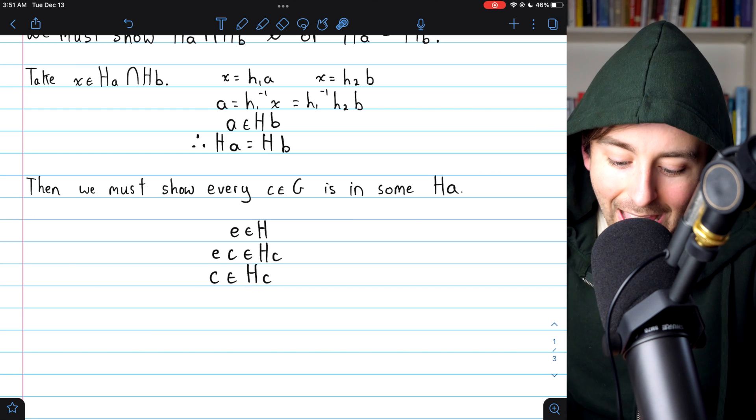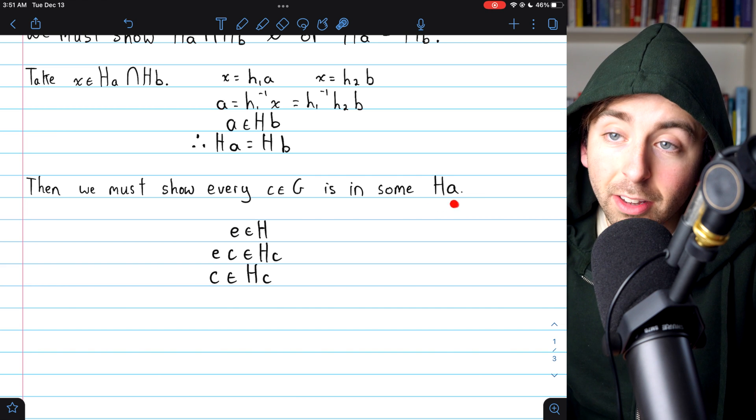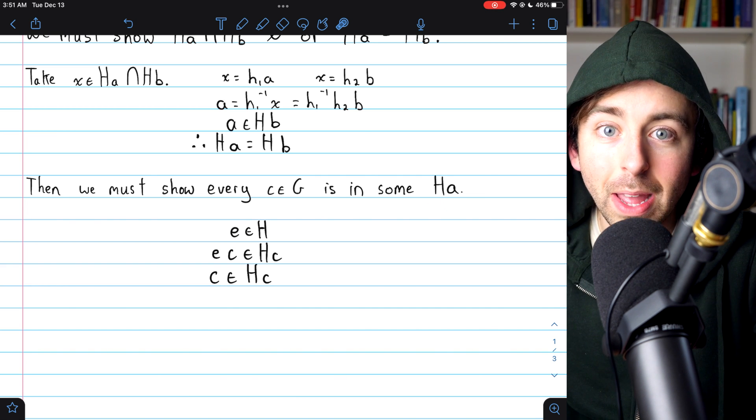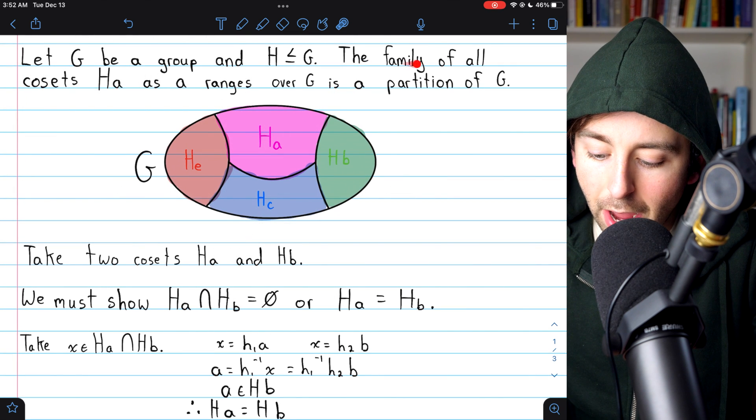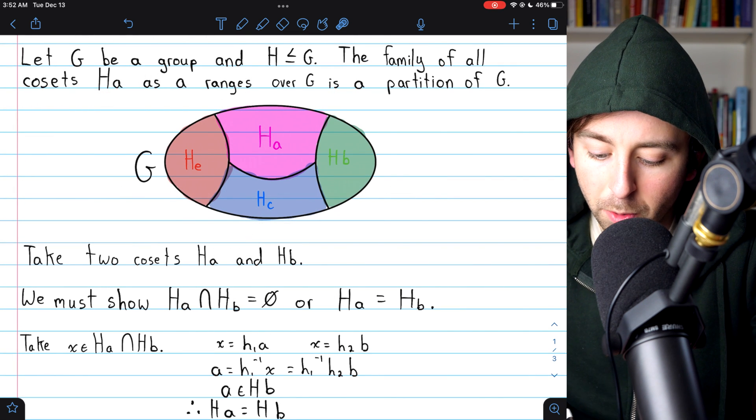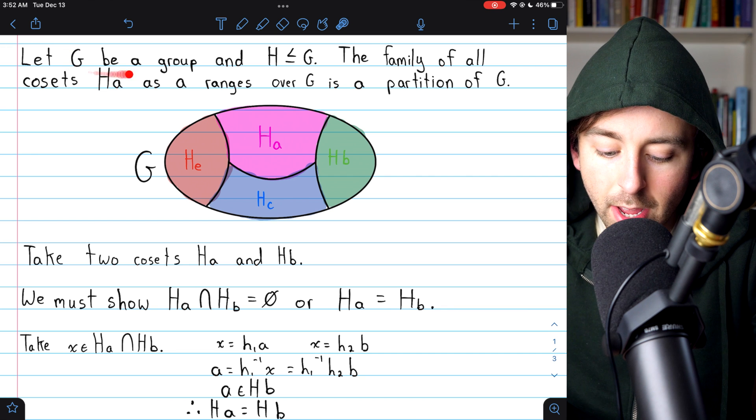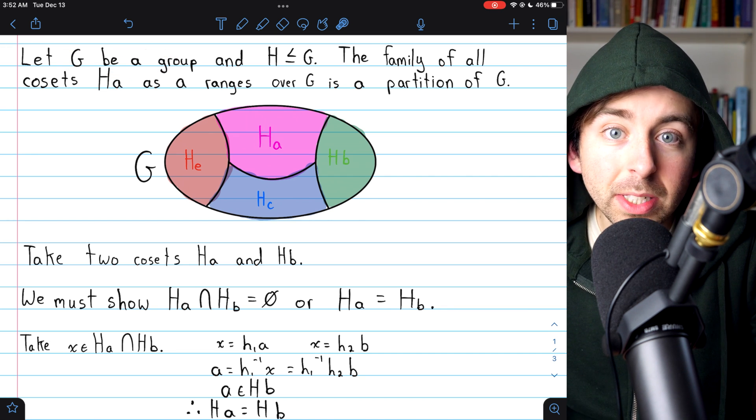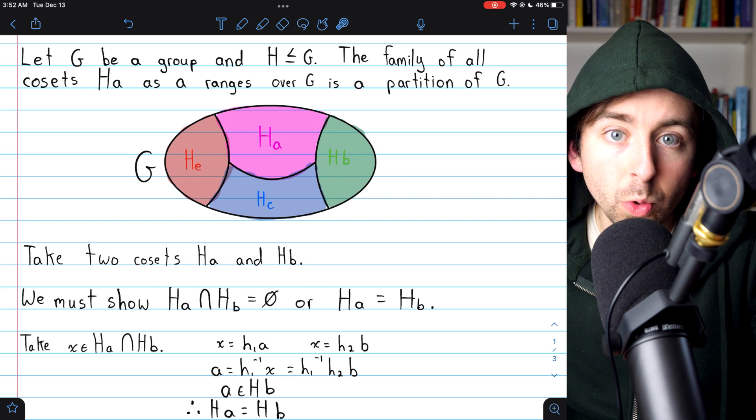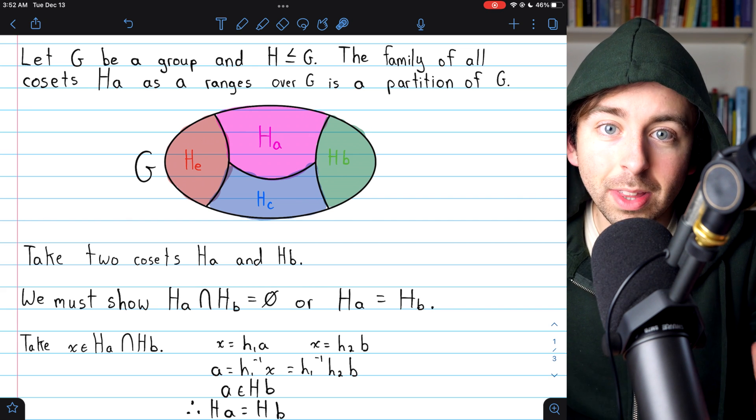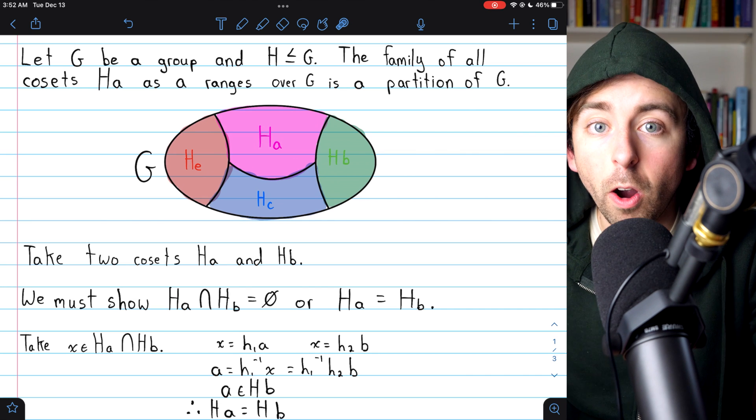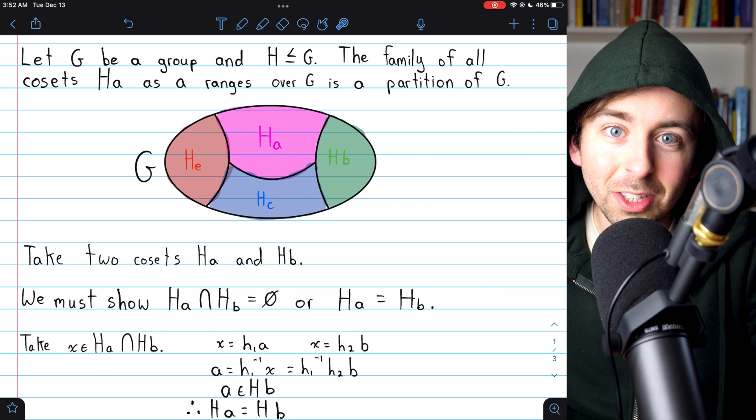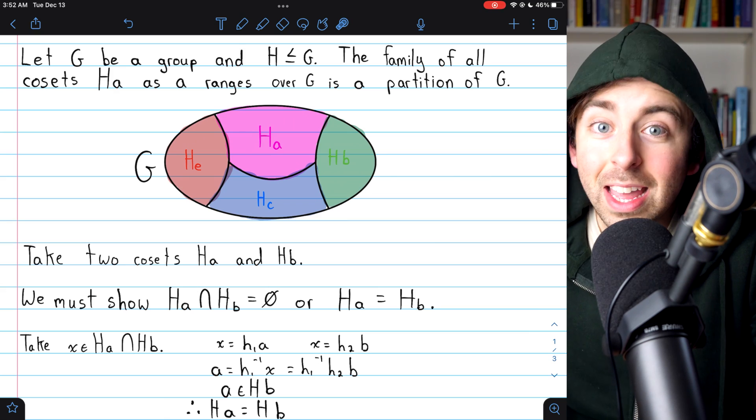And so indeed, any element of the group does belong to some coset of the subgroup H. And that proves that the family of all cosets of a subgroup will be a partition of the containing group. We've shown that every element of the group does belong to one of the cosets. And we've shown that all of the distinct cosets are disjoint. So we've got a partition. Really cool. And we will use this result in the future. Thanks for watching. Let me know in the comments if you've got any questions.